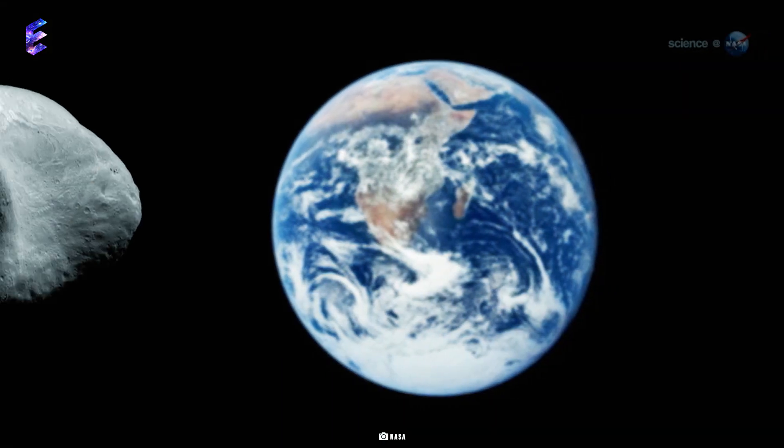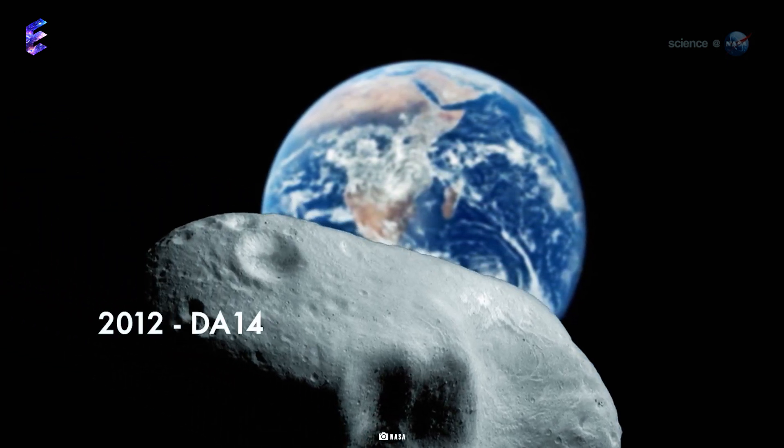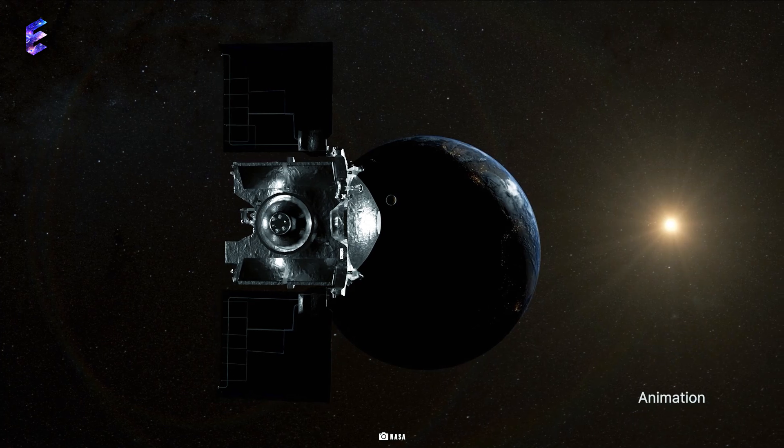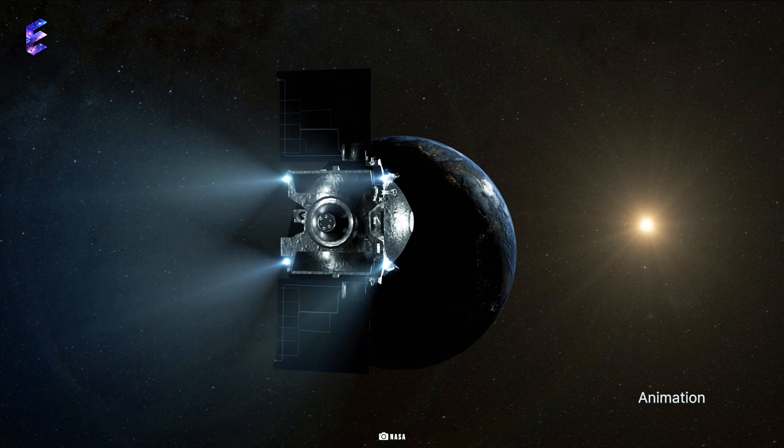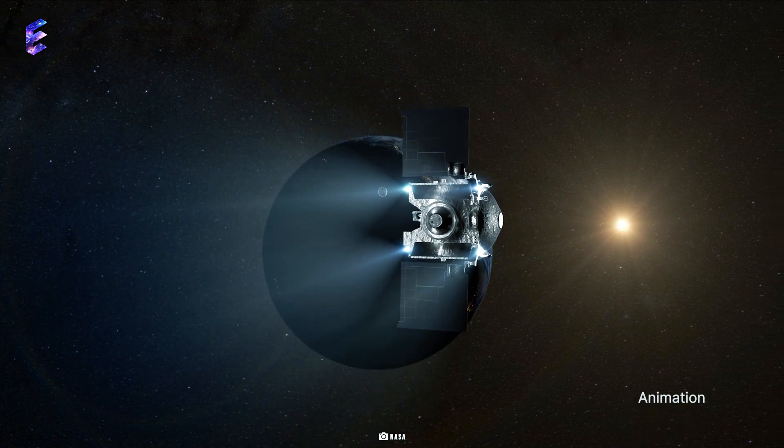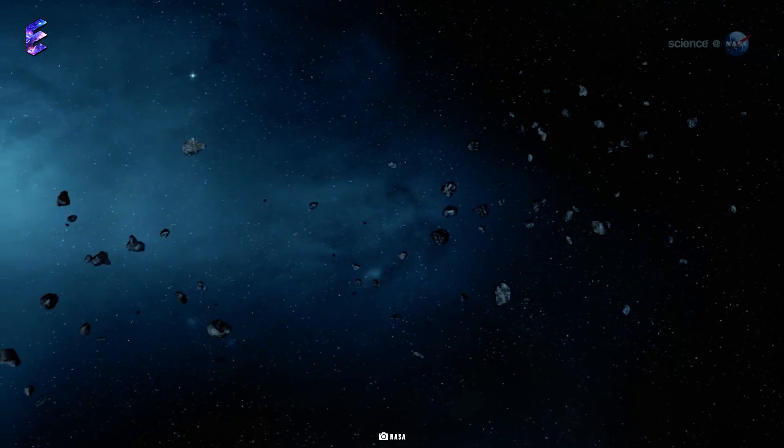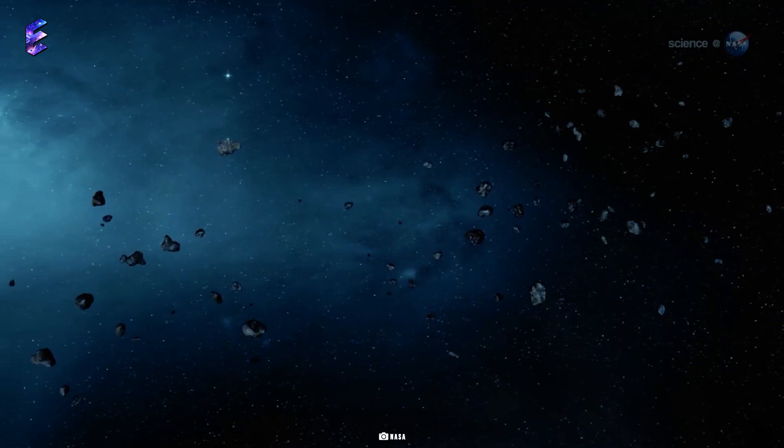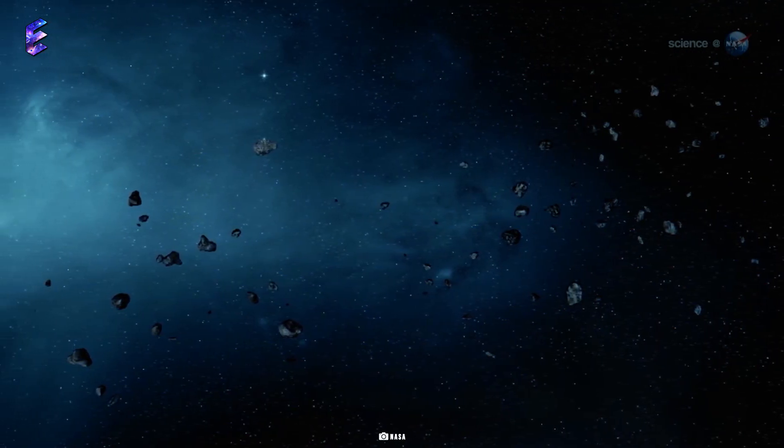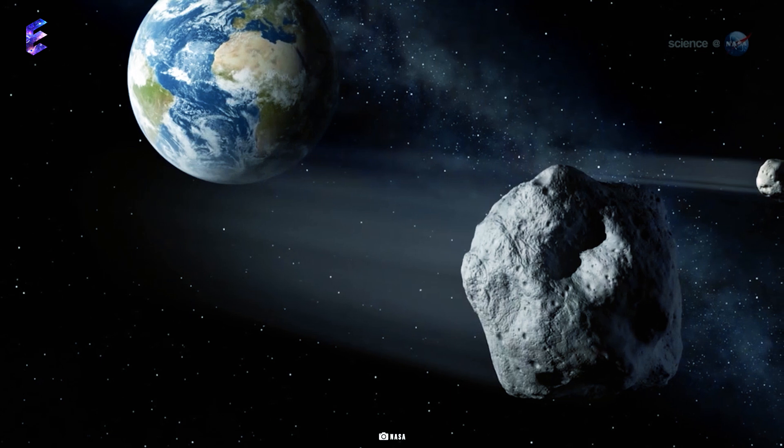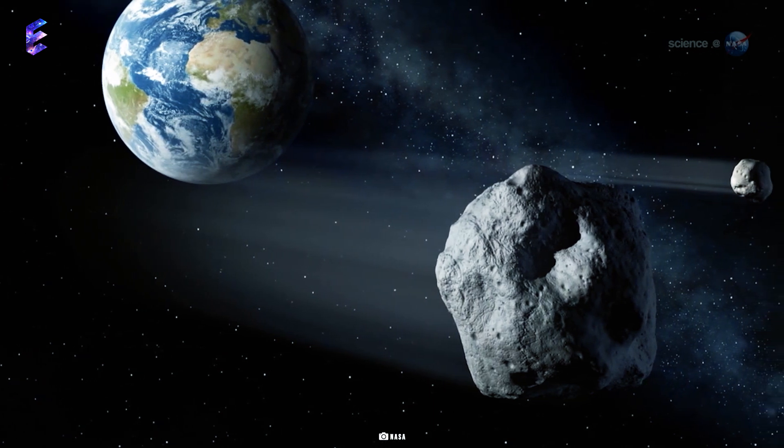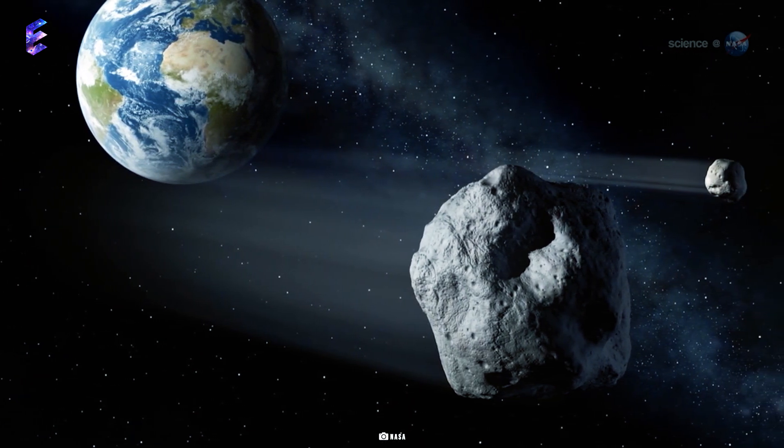However, scientists pointed out that during Apophis' 2029 flyby with Earth, it would pass through a gravitational keyhole of no more than about 500 miles in diameter. This will further set up a future impact exactly seven years later in April 2036. However, the 2036 impact of Apophis was also ruled out in 2021.